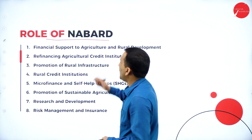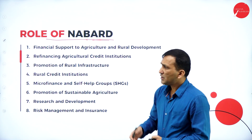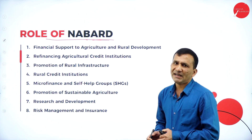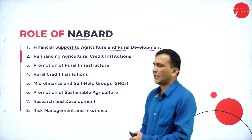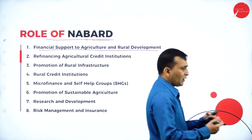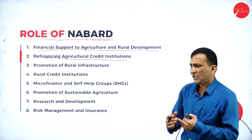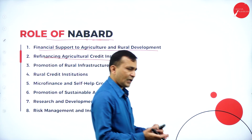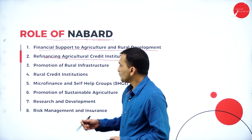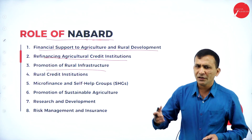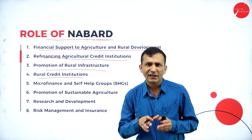Next is the role of NABARD — National Bank for Agriculture and Rural Development — which focuses only on rural development. NABARD promotes agriculture activity and provides financial support to agriculture and rural development. We cannot neglect rural areas; most farmers are cultivating because of support from NABARD. Refinancing agriculture and credit institutions covers not only seeds and land development but also helping farmers purchase machinery and tractors. Promotion of rural infrastructure includes roads, transportation, and water supply through rural credit institutions.